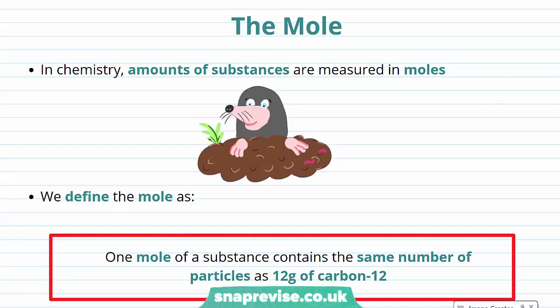In chemistry we have a special unit that we use when we're describing the amount of a substance that we have. This unit is called the mole. All the particles involved in chemistry are so small that most chemical reactions involve millions or billions of them. The mole is a really useful measure as it allows us to work out the number of particles involved in a chemical reaction without needing to detect or measure them directly.